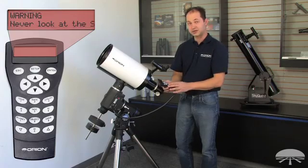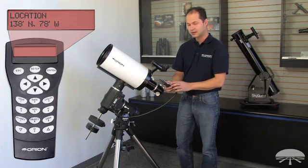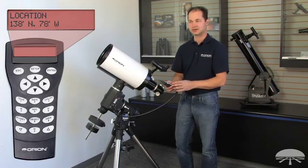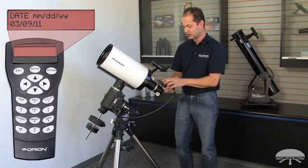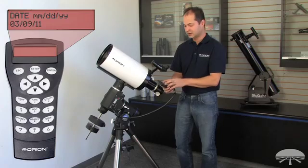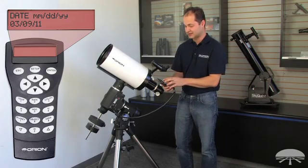The first thing it warns you is not to look at the sun without a proper solar filter. Once you've gotten past that warning, you enter your location. And this is going to be your longitude and latitude. The date, it's going to know what date and the exact time as well. So it doesn't have to be exact atomic time. Just within a minute or two is accurate enough.